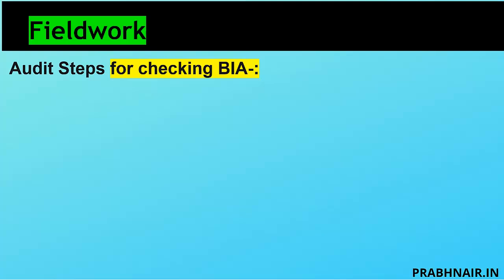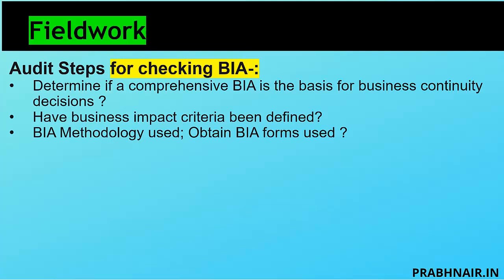Based on the BIA, we prepare the recovery strategy — whether to go for hot site, cold site, or warm site. We determine if a comprehensive BIA has been done as the basis for business continuity decisions. We collect the business report and risk assessment report of business functions, understand criticality and impact, and check whether the BIA has captured those details properly. We verify whether the business impact criteria have been defined — MTD, RTO, and RPO — and whether a BIA methodology like NIST-based or ISO-based BIA was used.